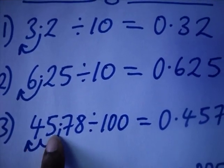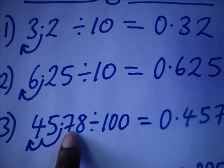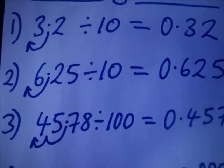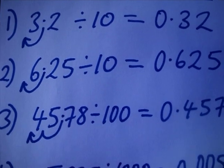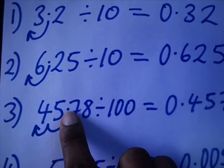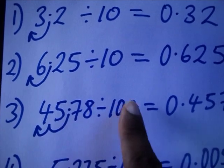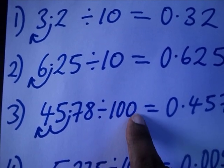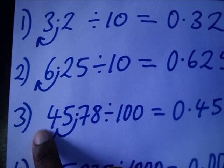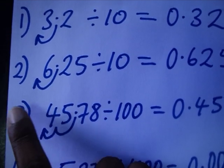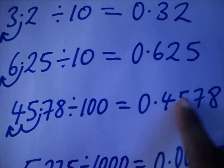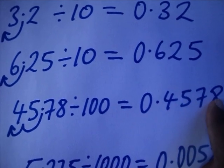Likewise, 45.78 divided by 100 equals what? You can see that I'm going to shift the point in that direction twice — once, twice. So I'm going to shift once, twice. You put your pointer and you get 0.4578. You see that?